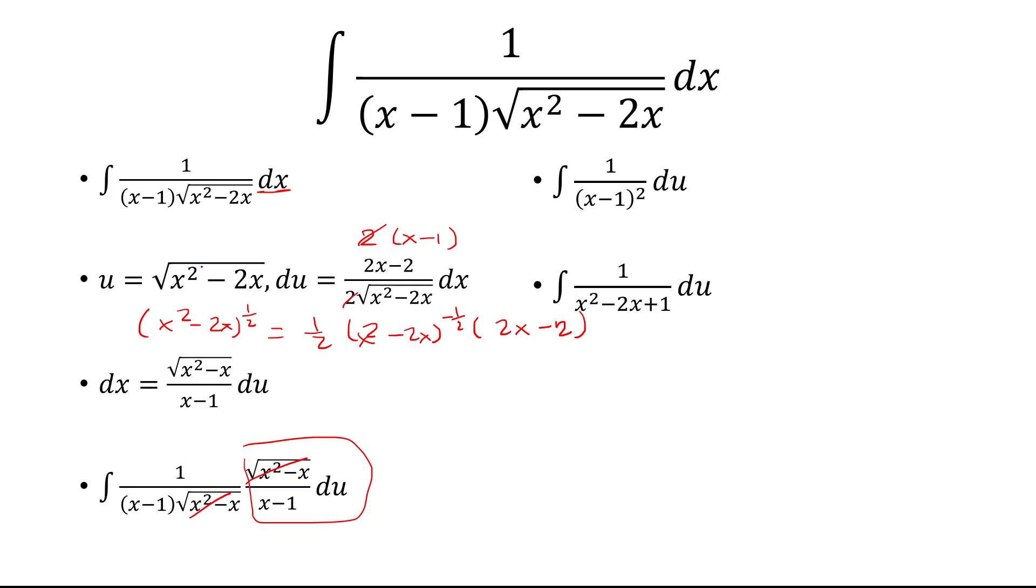If I square both sides over here, I have u squared is equal to x squared minus 2x. But I have a plus 1. So, I need to add 1 to both sides. And so, x squared minus 2x plus 1 is the same thing as u squared plus 1.